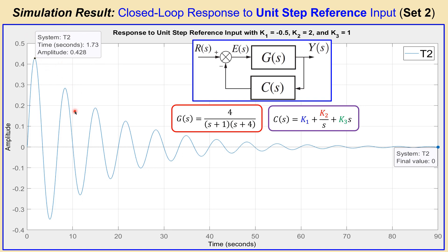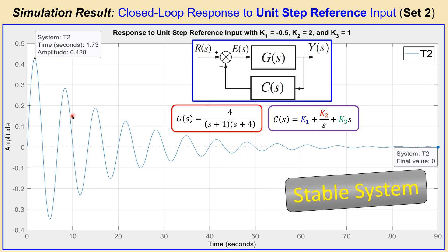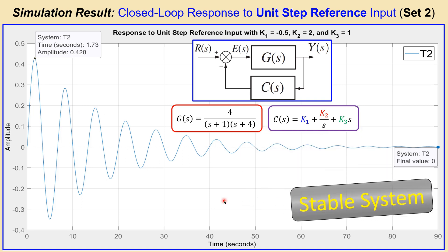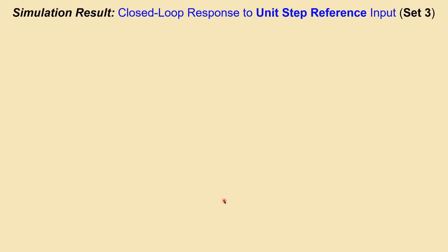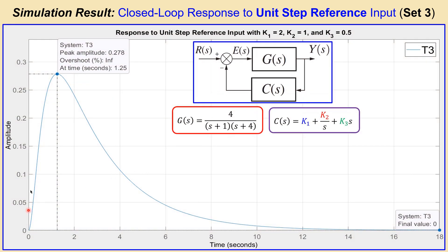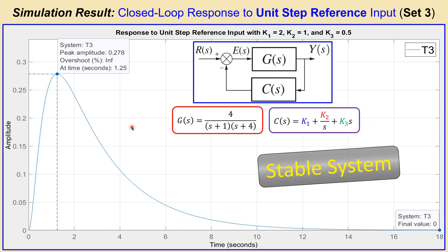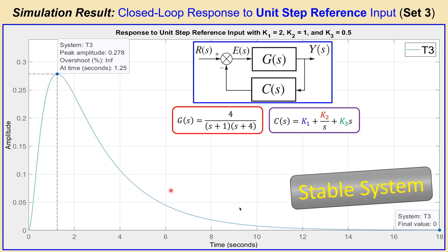For set three the result is much better. There is no significant damped oscillation and the response approaches zero as the final value more smoothly. The peak amplitude for set three is smaller than for the other two sets. All three sets give a stable system with the output approaching zero as the final value, confirming a steady-state error of 1.